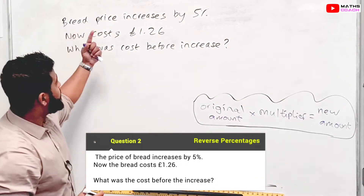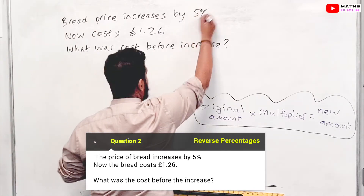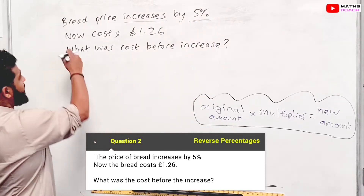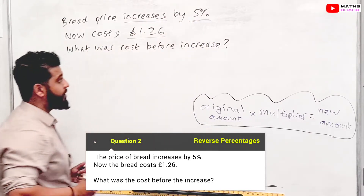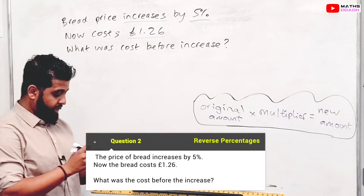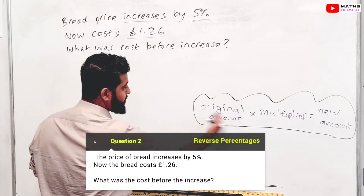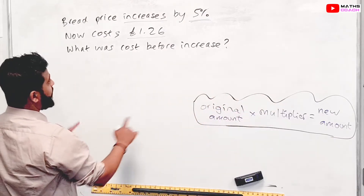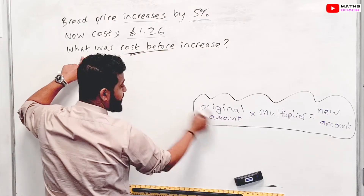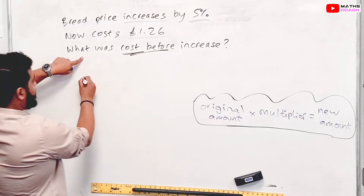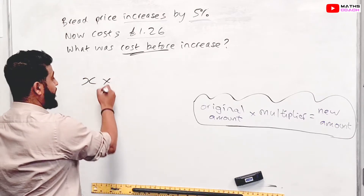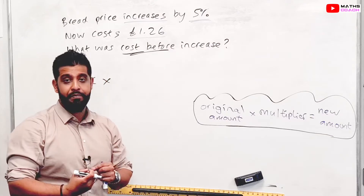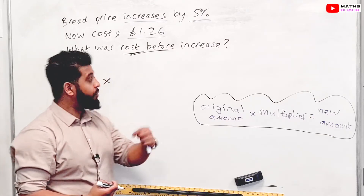The next question: the price of bread increases by 5% — let's highlight that 5%, and it's an increase this time. Now the bread costs £1.26. What was the cost before the increase? Let's use our method: original amount times the multiplier equals the new amount. We are trying to work out the cost before the increase, which is the original amount, so we'll write an X for that.